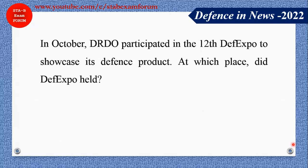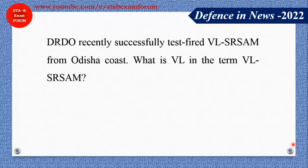In October, DRDO participated in the 12th DefExpo to showcase its different products. At which place was DefExpo held? This is very important from the current affairs point of view. The correct answer is Gandhinagar, Gujarat. Also, the recently held Aero Show took place in Bengaluru, Karnataka.